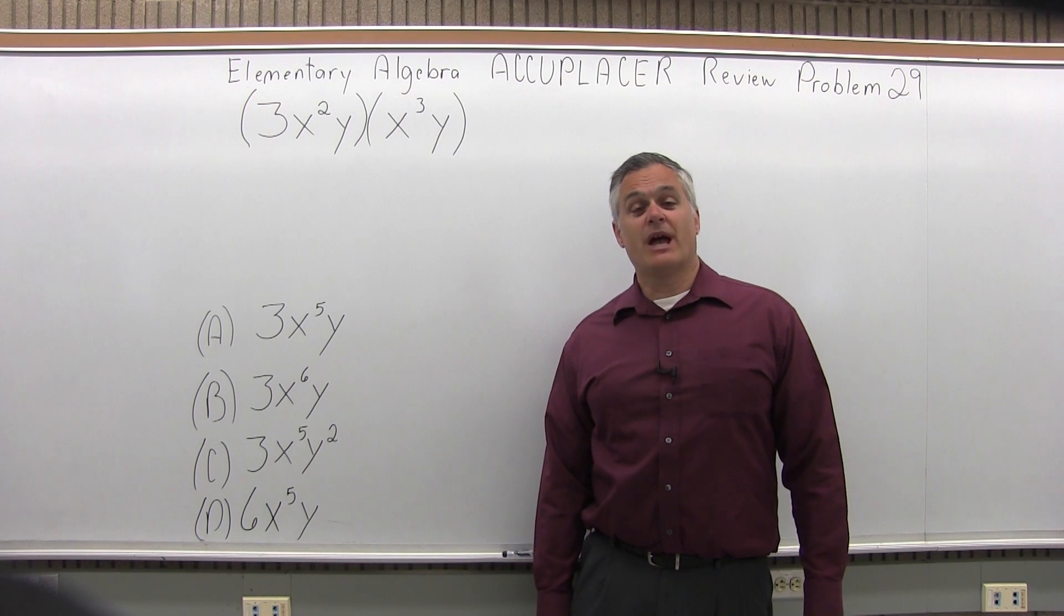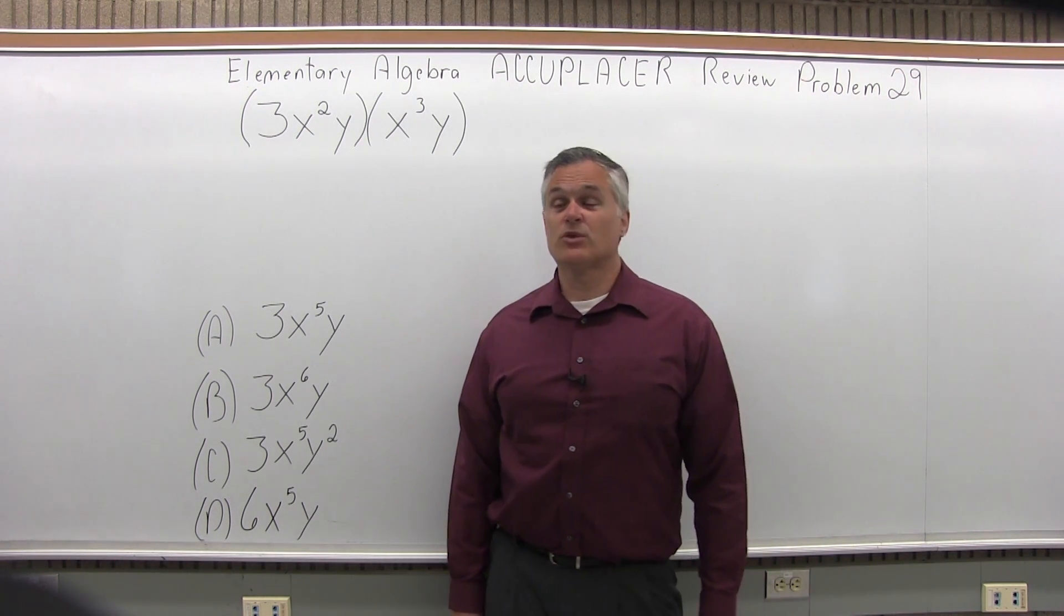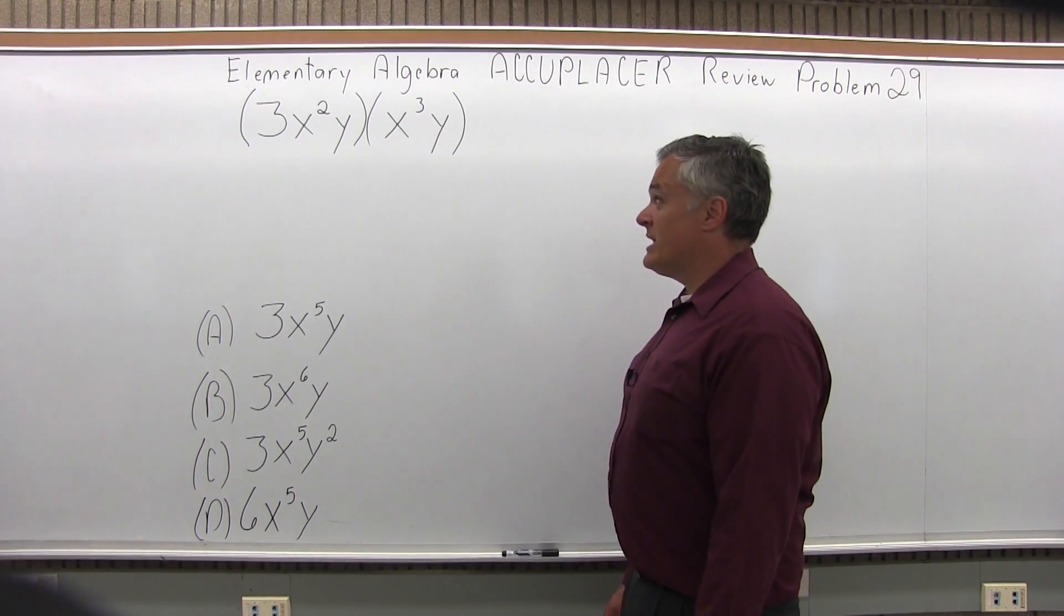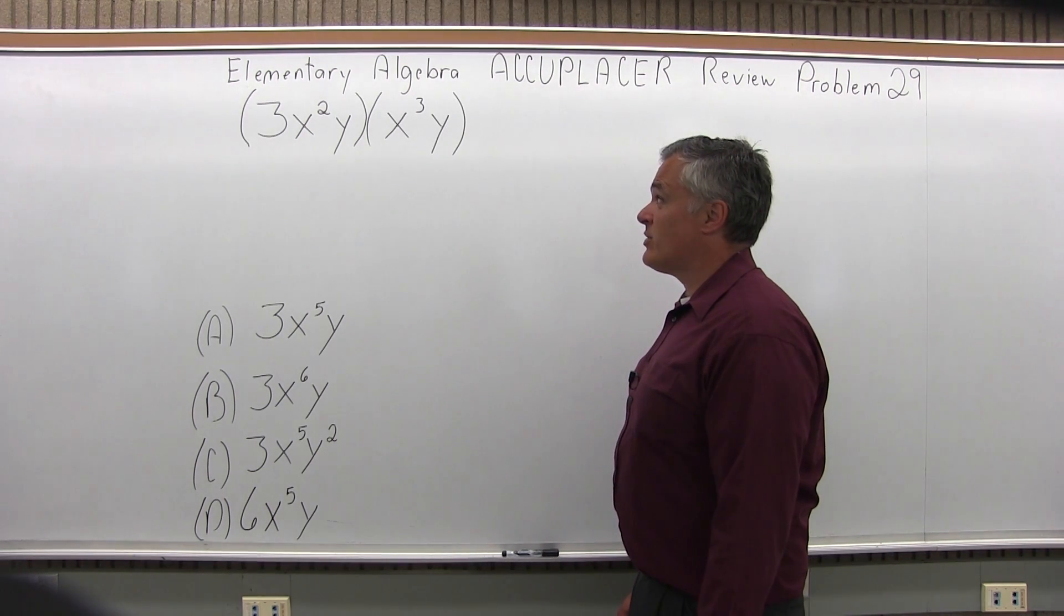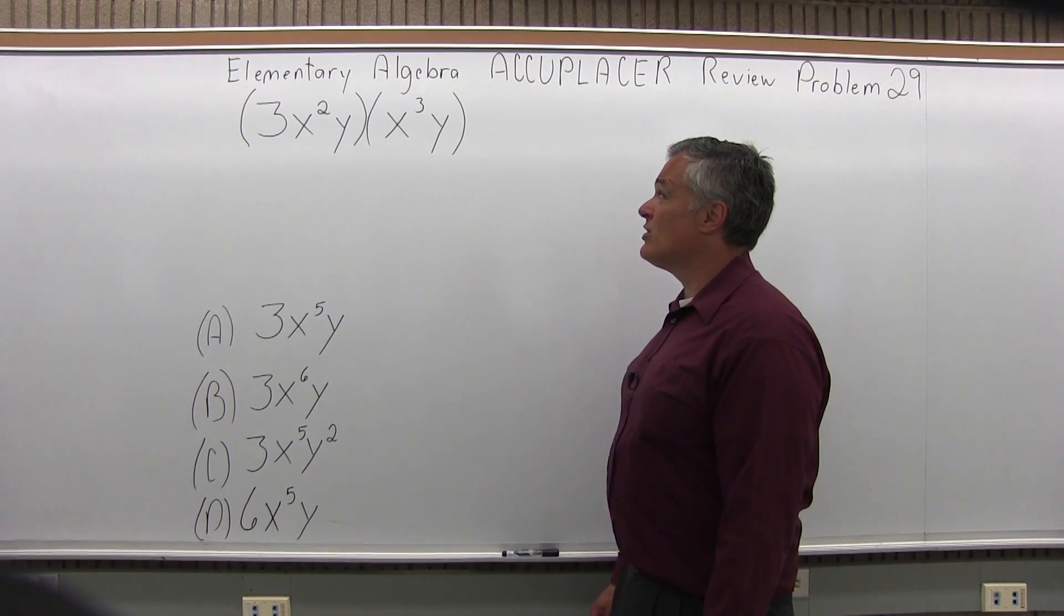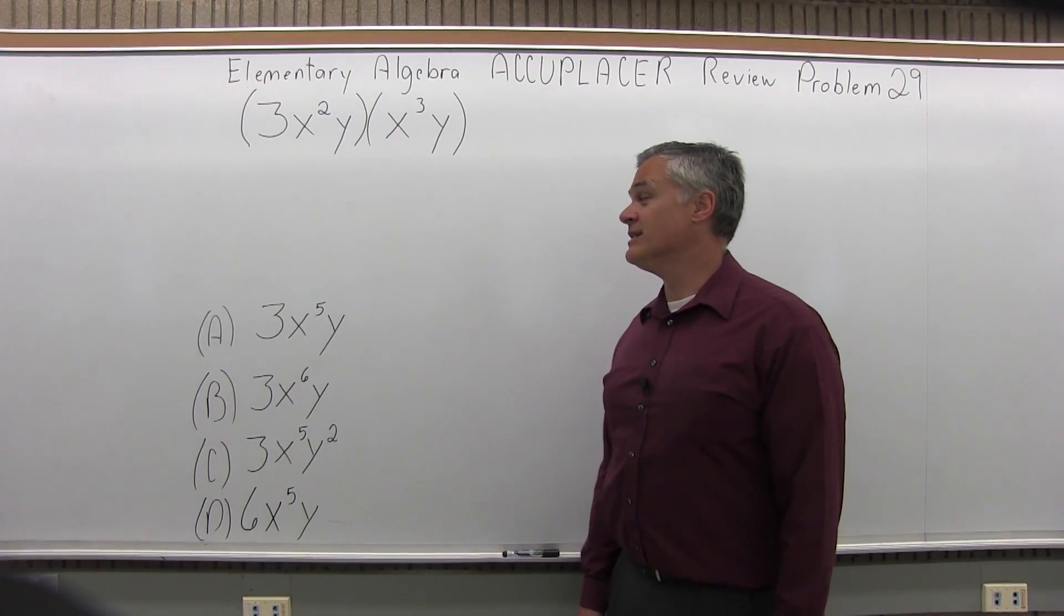This is the Elementary Algebra Accuplacer Review, problem number 29. We have 3x to the second power y in parentheses times x to the third y in parentheses, and we want to simplify this.